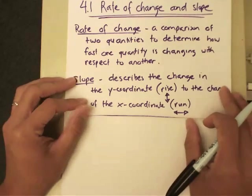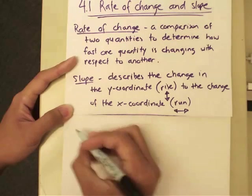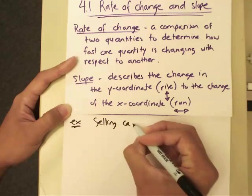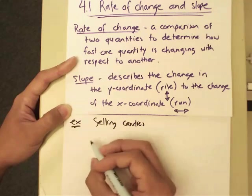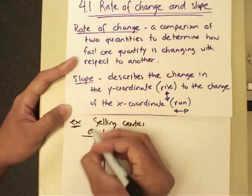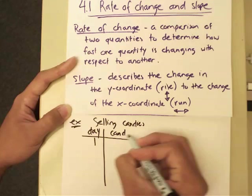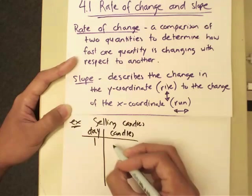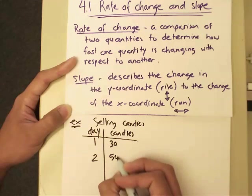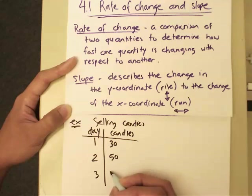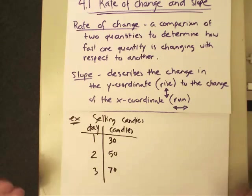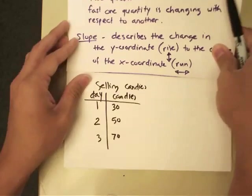Let's look at a real-life example. Pretend you are selling candies at your school for fundraisers and you're monitoring your progress. I'll put it in a table form: Day and Number of Candies Sold. On the first day you sold 30 pieces, the second day you managed to sell 50 pieces, and on the third day you sold 70 pieces of candies. You want to monitor this change — you see it is increasing — but you want to put a value to it.